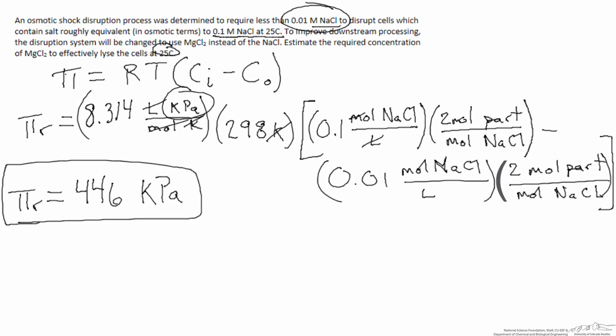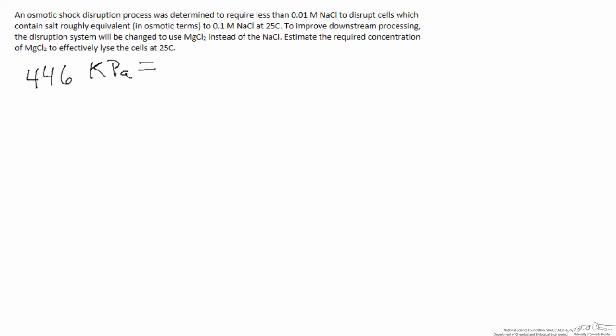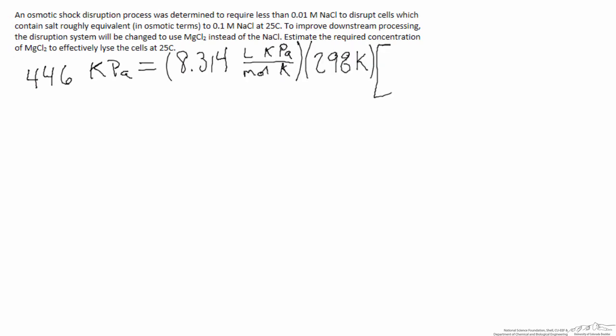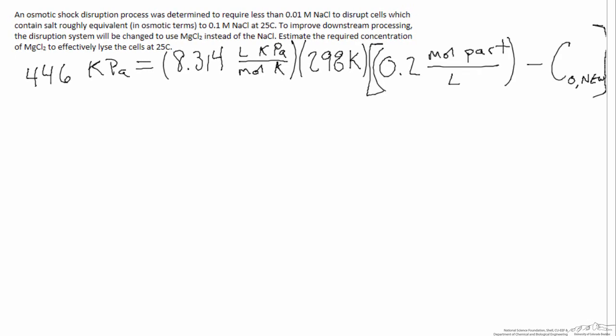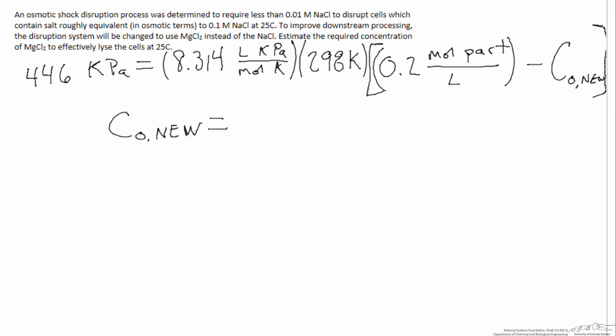Now that we know the osmotic pressure required to lyse these cells is 446 kPa, we need to calculate a new external particle concentration for magnesium chloride. We plug 446 kPa into our Van't Hoff relationship, incorporate the gas constant and temperature, and include the concentration of salt particles inside the cell from the previous calculation. Subtracting the unknown external particle concentration and solving, we determine the new concentration of particles on the outside of the cell needs to be 0.02 moles per liter.